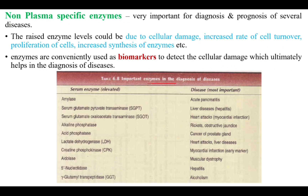Important enzymes in the diagnosis of diseases: amylase is used in acute pancreatitis; SGPT is most importantly used in liver disease, that is hepatitis; SGOT in MI (myocardial infarction); alkaline phosphatase in rickets; acid phosphatase in cancer of the prostate gland; lactate dehydrogenase in heart attacks; and creatine phosphokinase in myocardial infarction, which is the earliest marker.